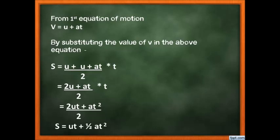Summary of the second equation derivation: start with distance = average velocity × time; use average velocity = (u + v)/2; substitute the first equation of motion (v = u + at) to replace v; expand and simplify to get s = ut + ½at². The key starting point for the second equation is average velocity.